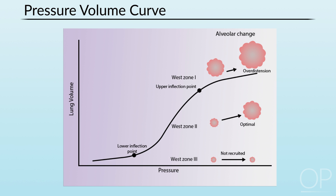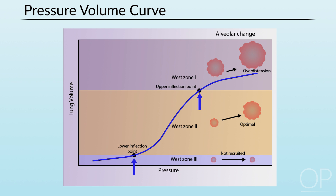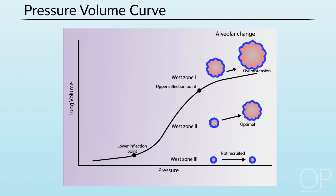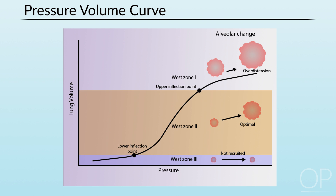Pressure-volume curves help us understand what to consider. On the x-axis is positive pressure applied to the lung, and on the y-axis is lung volume. The inspiratory curve has three different zones with lower and upper inflection points. Below the lower inflection point, alveoli are not recruited and change in size is minimal. In the middle region, there is optimal expansion and recoil of alveoli. Above the upper inflection point, the alveoli are over-distended.